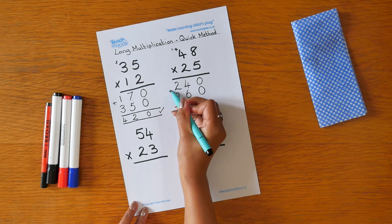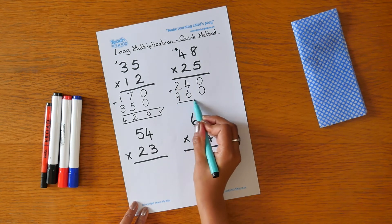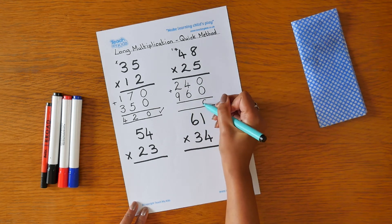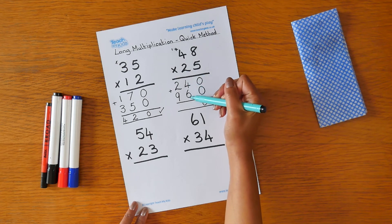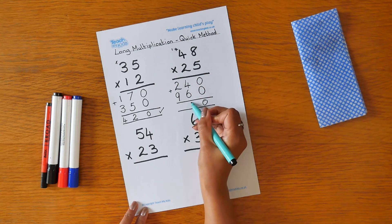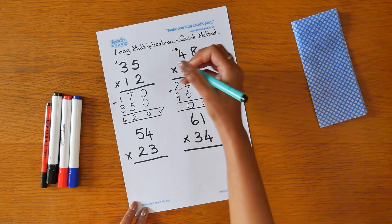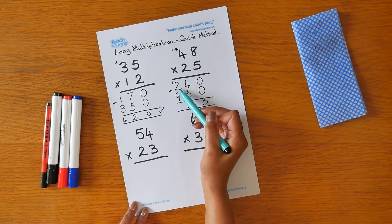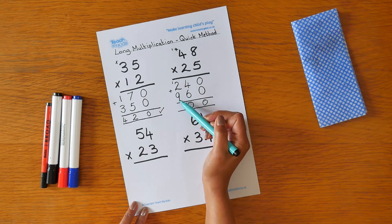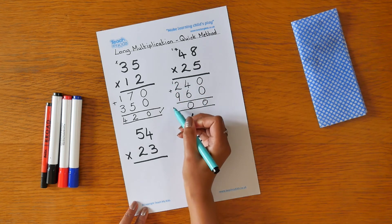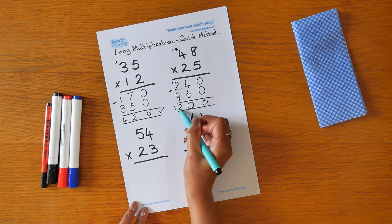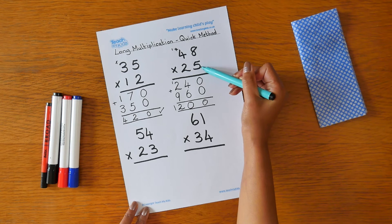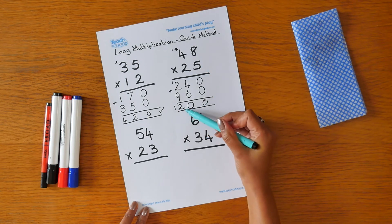2 times 4 is 8 plus 1 is 9. We now need to add the 2 numbers together. 0 add 0 is 0. 4 add 6 is 10. Put the 0 in the tens column and carry the 1. 2 add 9 is 11 plus the 1 is 12. So our answer to 48 times 25 is 1,200.